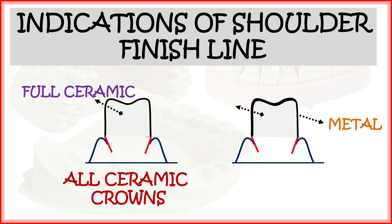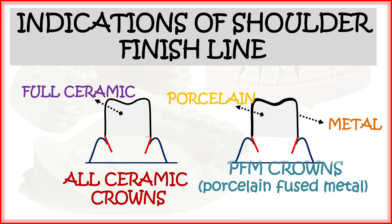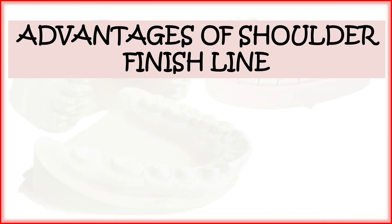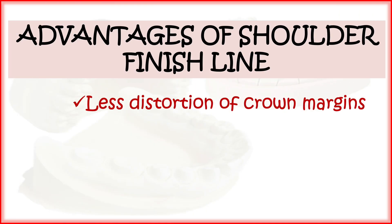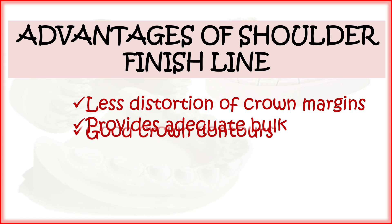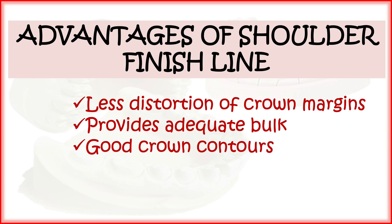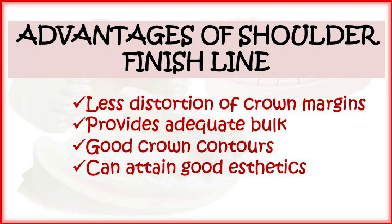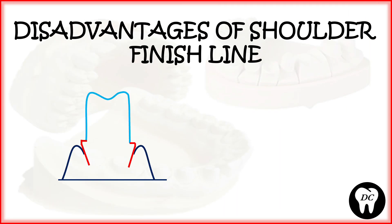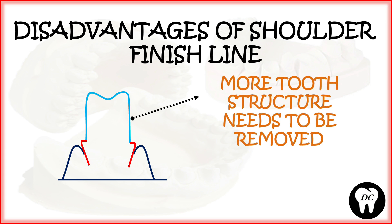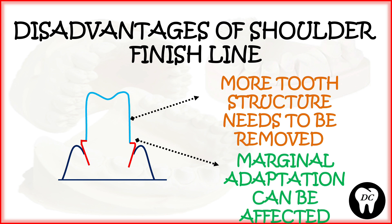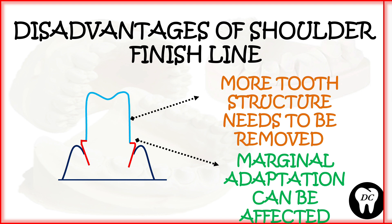Advantages of the shoulder finish line include less distortion of crown margin, adequate bulk for the prosthesis, good crown contours, and good aesthetics. Disadvantages include that more tooth structure needs to be removed for PFM, and marginal adaptation can be affected due to the 90-degree angle, increasing chances of marginal leakage.